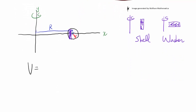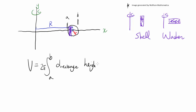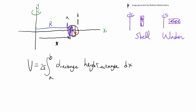The solid generated by rotating this two-dimensional shape around the y-axis is going to be 2π times the integral from A to B of the distance to the rectangle times the height of the rectangle dx. In our case, the distance to this rectangle is just x, because x is changing — so our distance is the same as x.